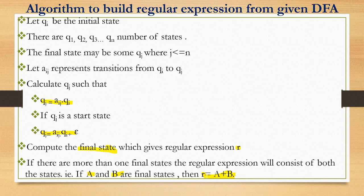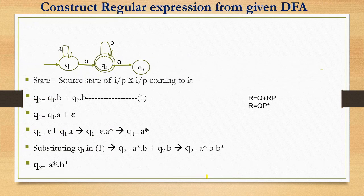This is the algorithm to build a regular expression from a given DFA. Now we will study this with example questions. We are given a DFA with states Q1 and Q2, inputs A and B, where Q2 is the final state. Q1 has an A self-loop, Q2 has a B self-loop, and B makes the transition from Q1 to Q2.